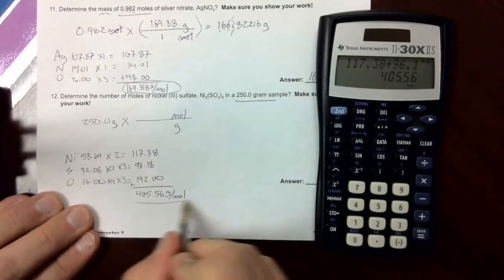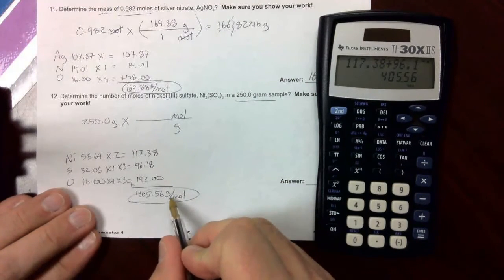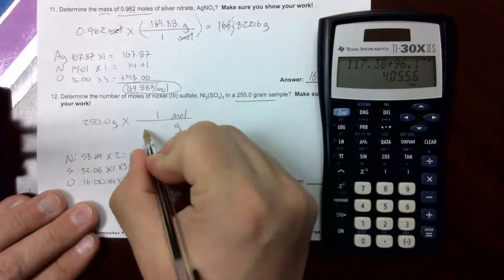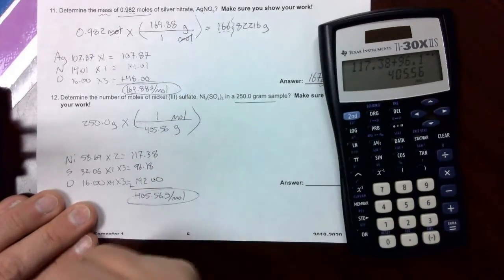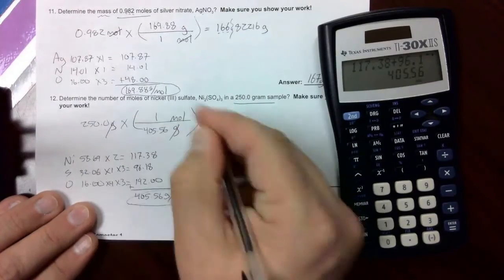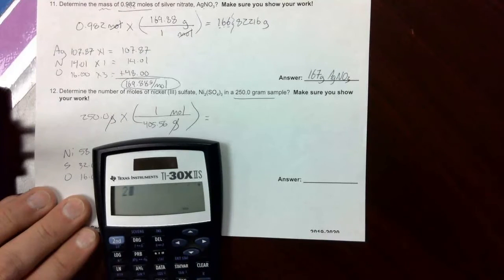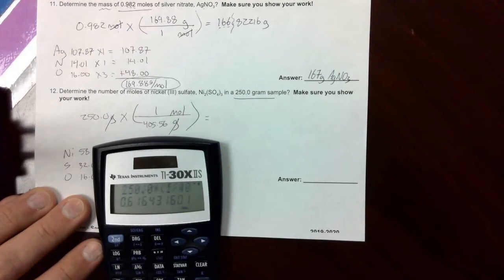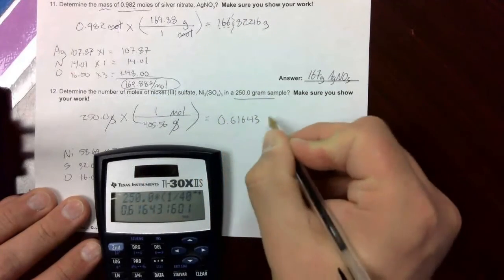This fraction right here tells us what to put in our fraction in our conversion problem up here. Mole doesn't have a number. That means it gets 1. Grams has a number, 405.56. I'm going to use parentheses here. Cross off grams. And use our calculator to solve now. We're going to type 250.0 times parentheses, 1 divided by 405.56. Close parentheses. Enter. And we get an answer of 0.61643 moles.